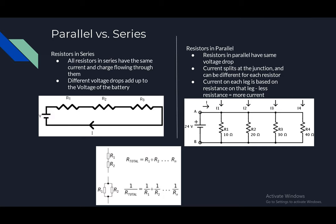Resistors in parallel have the same voltage drop. Current splits at the junction and can be different from each resistor. Current on each leg is based on the resistance on that leg. Less resistance equals more current.